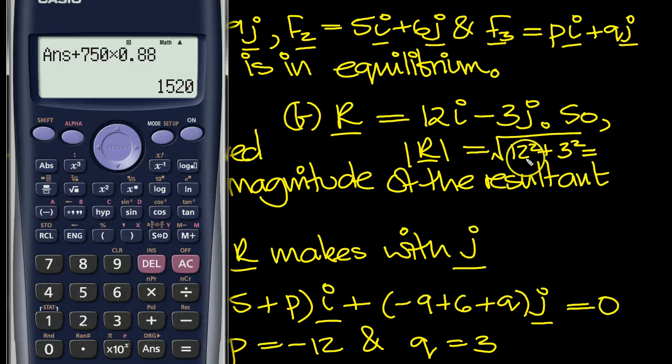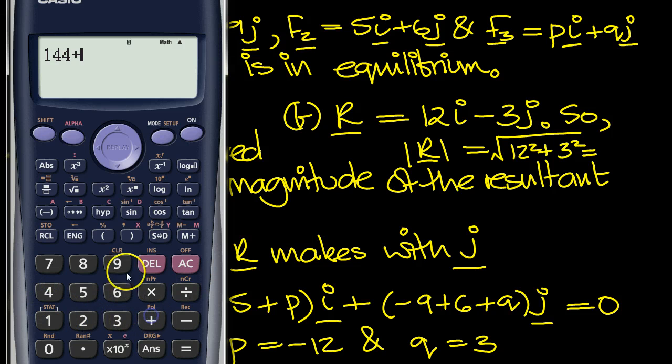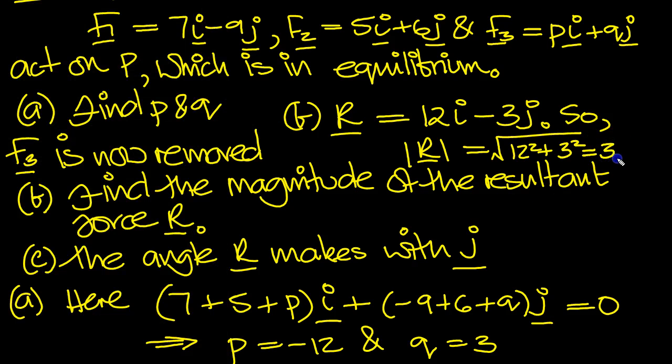And we need to tap that in the calculator. So 144 plus 9, equals 153. So square root of 153, the answer, is 3 root 17 newtons. So we can leave it in surd form, if we wish.